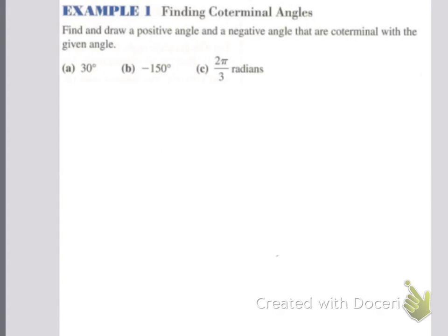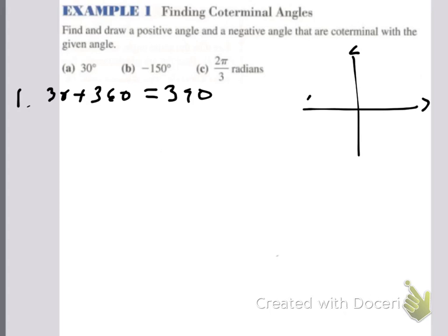We want to find and draw positive and negative angles that are coterminal with the given angle. In part A, the given angle is 30 degrees. Very simply, to find the positive coterminal angle, we do 30 plus 360 degrees and get 390. We draw that — we start at the initial side, go around once, that's 360, then add 30 to that. So that's a 390-degree angle.